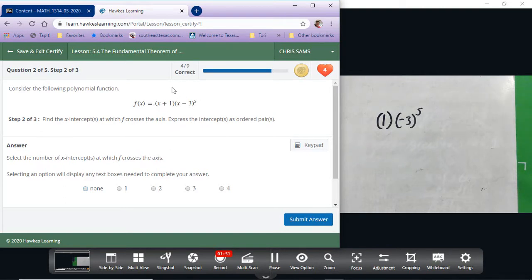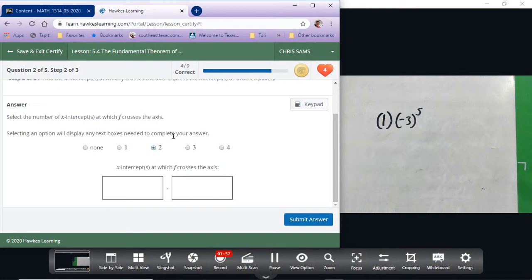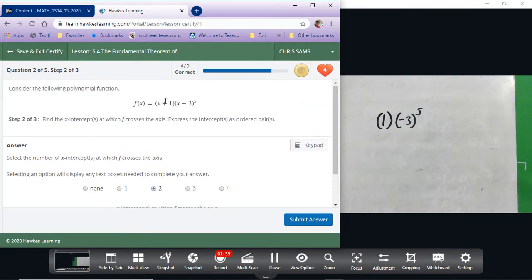Both of these will cross. There's two of them, two different numbers. When we solve these, this will give me opposite sign of negative one, this will give me a positive three. When you set them equal to zero, basically the signs are going to change.